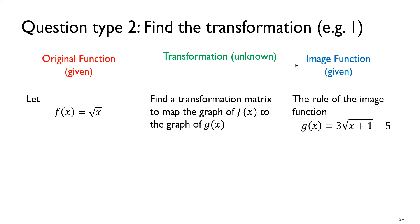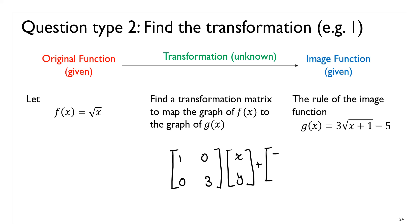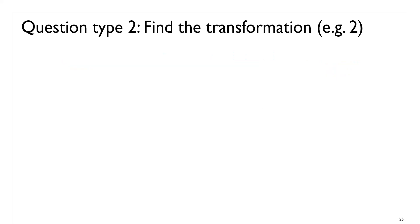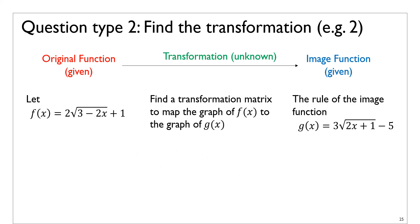So you start from square root of x and go to 3 times square root of (x + 1) minus 5. It should be very easy to tell the transformation: a dilation by a factor of 3 from the y-axis, followed by a translation of 1 unit to the left (that's the x + 1) and a translation of 5 units up. If given a question like this, you should be able to just read the transformations from the two rules without any extra algebra.